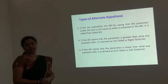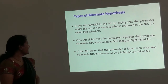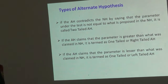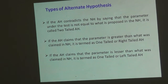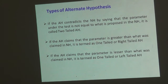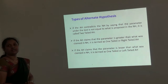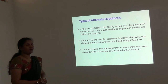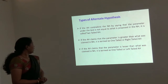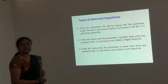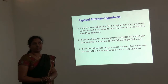Here we have three types of alternate hypothesis. If the alternate hypothesis contradicts the null hypothesis by saying that the parameter under test is not equal to what is proposed in the null hypothesis, it is said to be a two-tailed alternate hypothesis. If the alternate hypothesis claims that the parameter is greater than what is claimed in null hypothesis, we call it a right-tailed or one-tailed alternate hypothesis. Similarly, if the alternate hypothesis states the parameter is less than what is claimed in null hypothesis, it is termed as one-tailed or left-tailed alternate hypothesis.